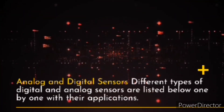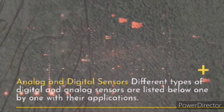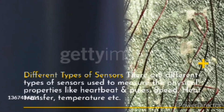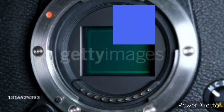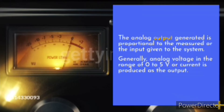Different types of digital and analog sensors are listed below one by one with their applications. There are different types of sensors used to measure physical properties like heartbeat, fuel levels, speed, heat transfer, temperature, etc. A sensor that produces a continuous signal with respect to time with analog output is called an analog sensor. The voltage generated is proportional to the measured input. Generally, analog voltage in the range of 0 to 5V or current is produced as the output.